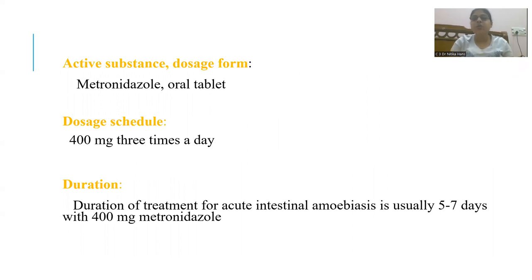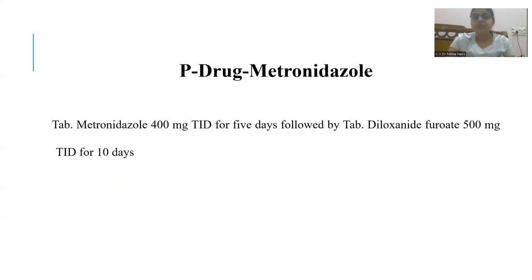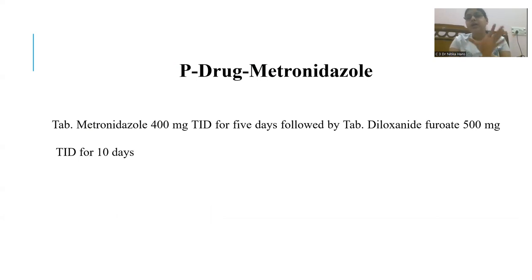The active substance and dosage form is metronidazole oral tablet. The dose schedule is 400 mg three times a day. Duration of treatment for acute intestinal amoebiasis is five to seven days. This is followed by tablet diloxanide furoate 500 mg three times a day for 10 days to prevent the carrier state. This is the proper prescription for the treatment of acute amoebic dysentery.